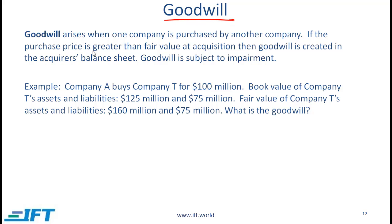Goodwill is another item you might see on the assets side of a balance sheet. Goodwill arises when one company is purchased by another company — you can only have goodwill when there is a purchase. If the purchase price is greater than the fair value at acquisition, then goodwill is created in the acquirer's balance sheet. Once reported, goodwill is subject to impairment, which is a mechanism for reducing the value of an asset.